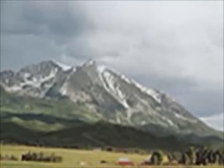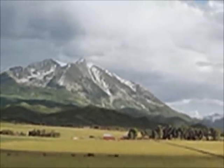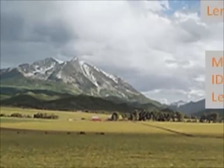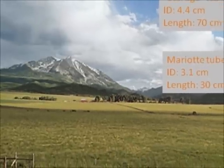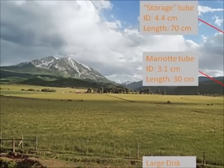In this example, the large disc permeameter storage tube has an interior diameter of 4.4 centimeters, and the large disc has a diameter of 22 centimeters.